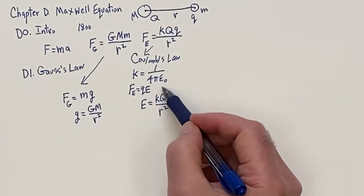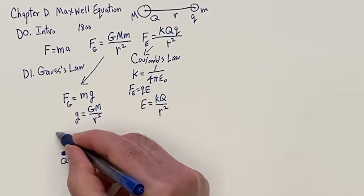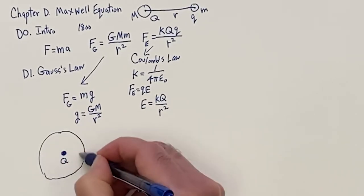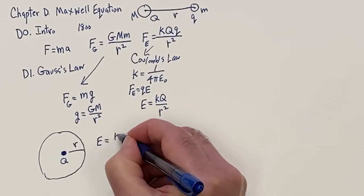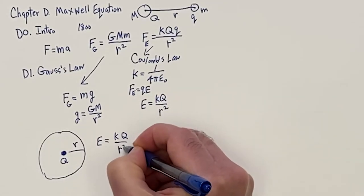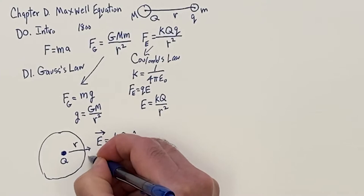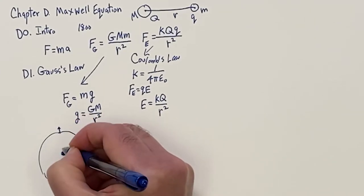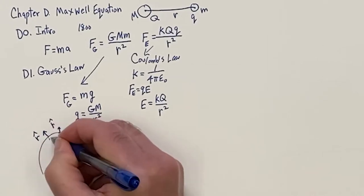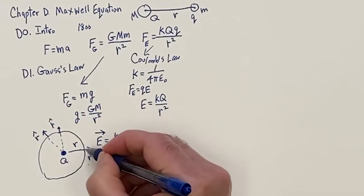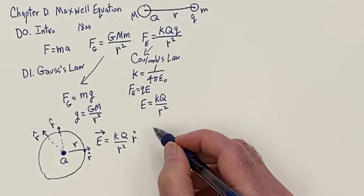Gauss's Law is an interesting way to express Coulomb's Law. If you have a charge Q and some sphere, the electric field is given by KQ over R squared, and we can make that a vector pointing with R hat. R hat is a unit vector that always points away from the center. At any point on the sphere, R hat would point away, since a plus charge would be repelled outward.